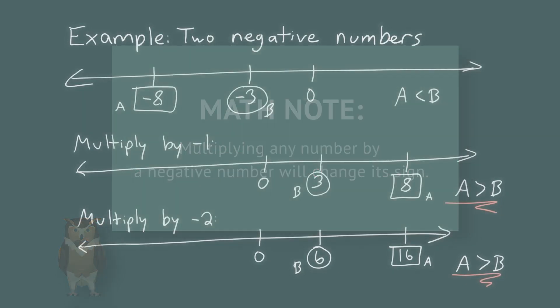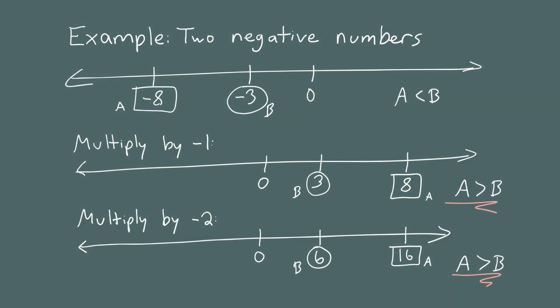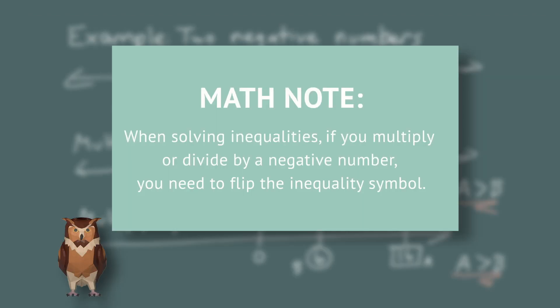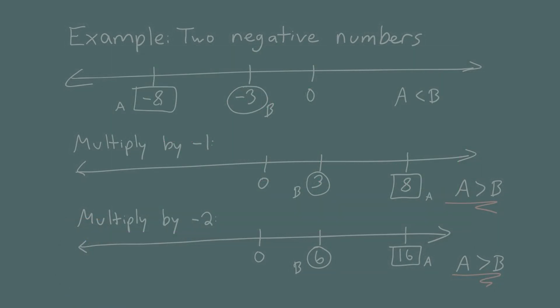When multiplying real numbers by a negative number, the signs change and the order changes. When you're solving inequalities, you need to understand at what point the signs change. To summarize: if you divide both sides by a negative number, flip the inequality symbol; otherwise, the symbol stays the same.